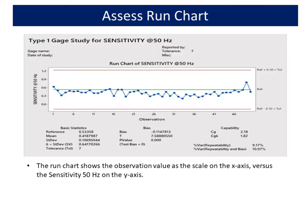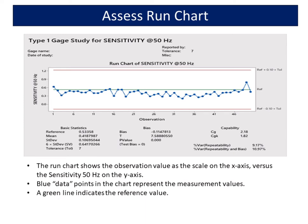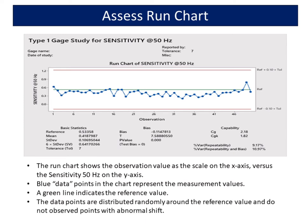The run chart shows the observation value as the scale on the x-axis versus the sensitivity 50 Hz on the y-axis. Blue data points in the chart represent the measurement values. A green line indicates the reference value. The data points are distributed randomly around the reference value and no points with abnormal shift are observed.